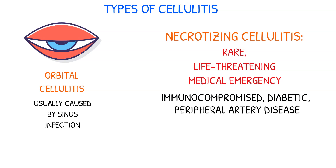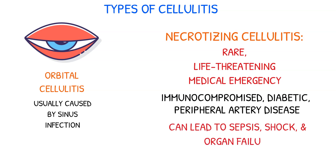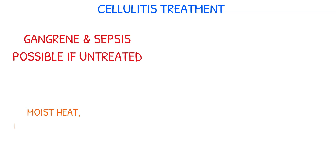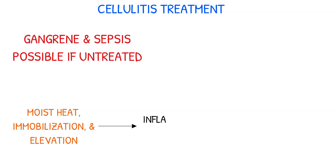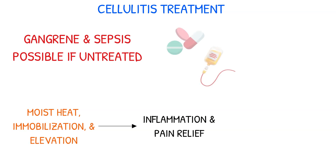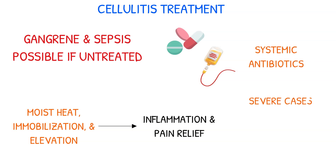If this condition is not diagnosed quickly, it can lead to sepsis, shock, and organ failure as it rapidly spreads through the body's soft tissue. Effective treatment of cellulitis is crucial, as untreated cellulitis can lead to gangrene and sepsis. Moist heat, immobilization, and elevation are commonly recommended to alleviate inflammation and pain, while systemic antibiotics are administered to combat the infection. In severe cases, hospitalization may be required.